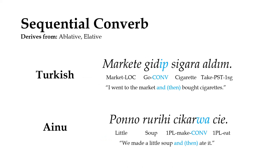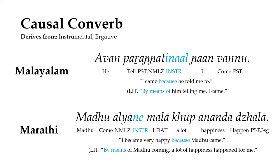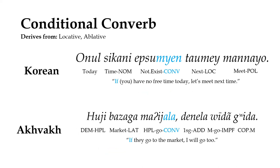Many languages also distinguish a specific converb for sequential or consecutive actions, denoting that the converb clause and the main clause happened one after the other. The purposive converb indicates that the main verb was carried out in order to complete the action of the converb clause. This form usually evolves from the dative, allative, or sometimes instrumental cases. Conversely, the causal converb signifies that the main clause was carried out as a result of the converb clause, and usually evolves from the instrumental or occasionally the ergative case.